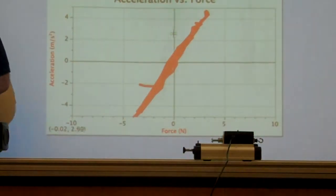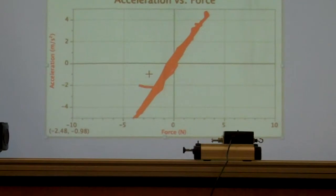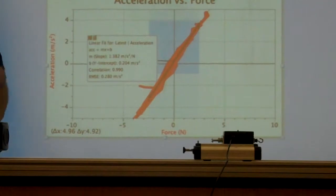And now what I'm going to do is analyze this data. So I'm going to drag over a portion of the line here, and I'm going to ask the computer to calculate the slope of that line. And the slope of the line is 1.38, and it says meters per second squared per newton. 1.38 is the slope.